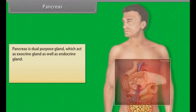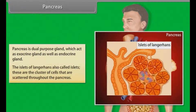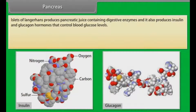The pancreas is a dual-purpose gland that acts as both an exocrine and an endocrine gland. The islets of Langerhans are clusters of cells scattered throughout the pancreas. They produce pancreatic juice containing digestive enzymes, and also produce insulin and glucagon hormones that control blood glucose levels.